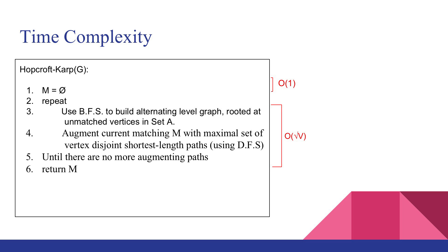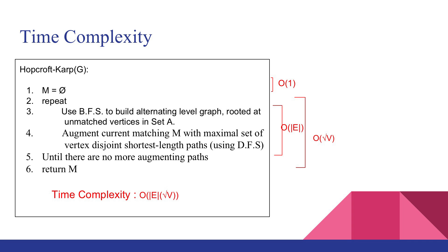Now let's look at lines 3 and 4, which are enclosed by the loop. Line 3 runs breadth-first search and line 4 runs depth-first search. Both of these algorithms run in linear time and have time complexities of O(e). So the time complexity enclosed by the loop is O(e). Combining the time complexity of the number of loop iterations and the time complexity enclosed within the loop gives us a total time complexity of O(e × √v).